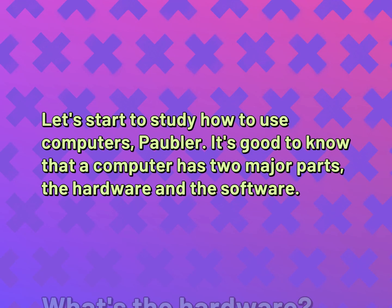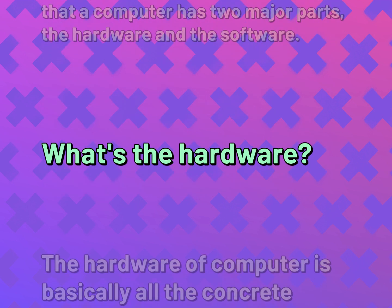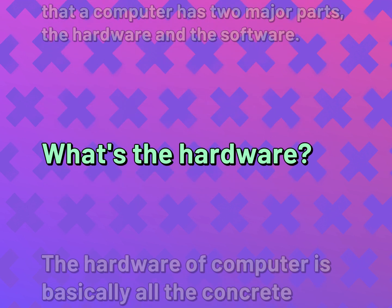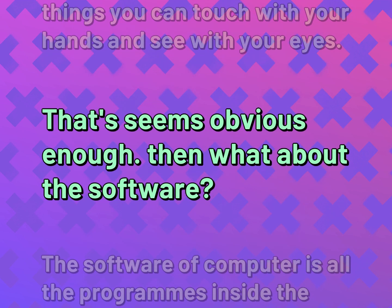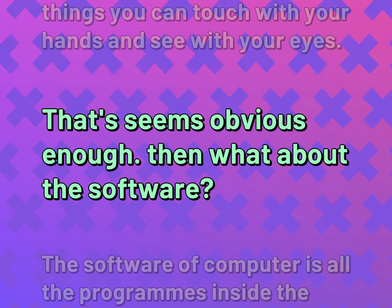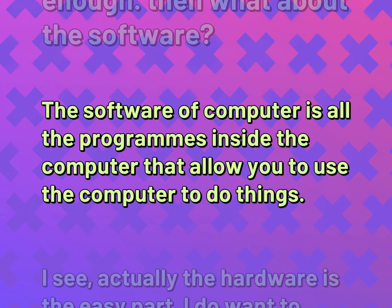Let's start to study how to use computers, Pobler. It's good to know that a computer has two major parts, the hardware and the software. What's the hardware? The hardware of a computer is basically all the concrete things you can touch with your hands and see with your eyes. That seems obvious enough. Then what about the software? The software of a computer is all the programs inside the computer that allow you to use the computer to do things.